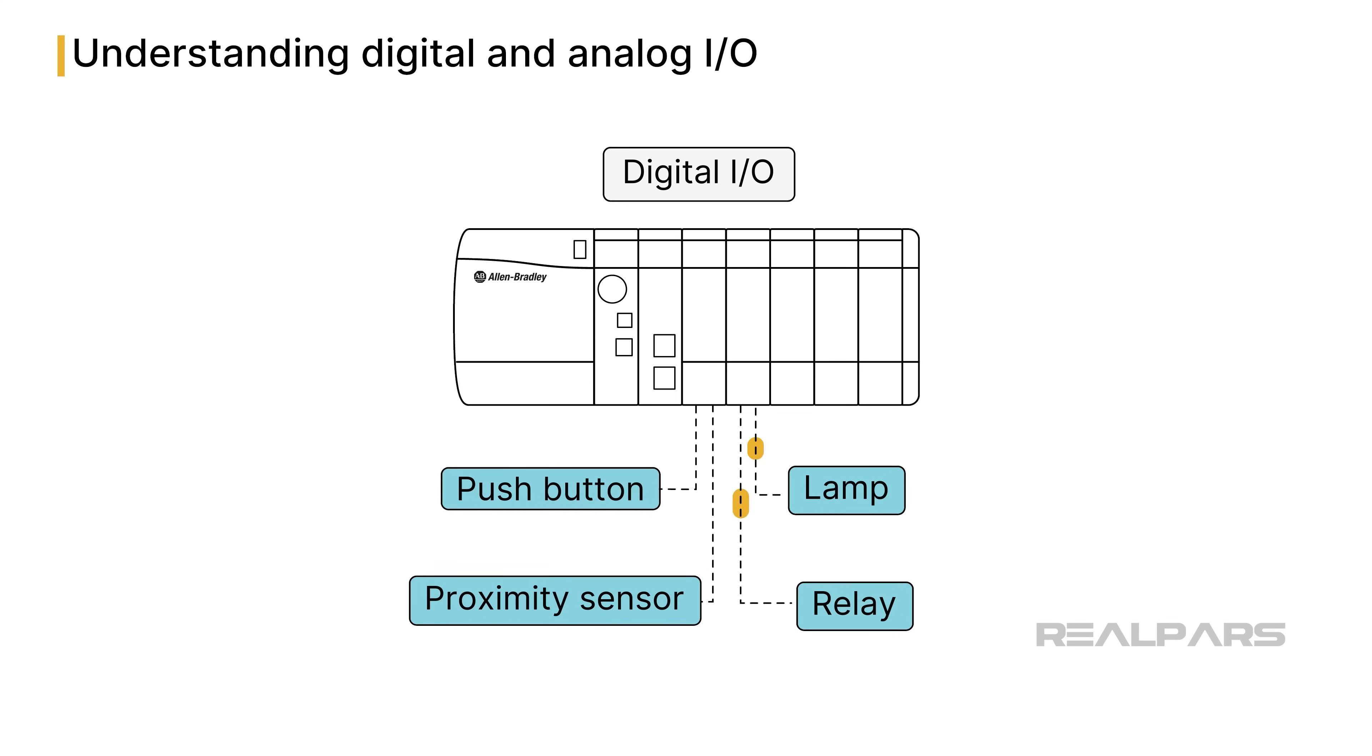The voltage state at a digital PLC output can represent the desired condition of an output device, such as a relay or a lamp.